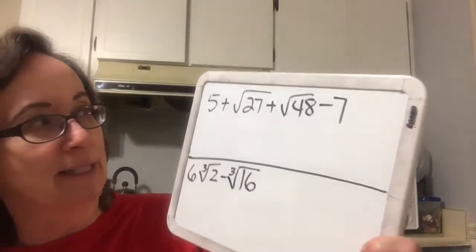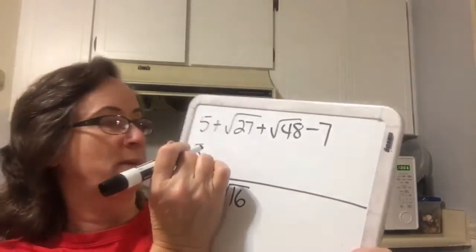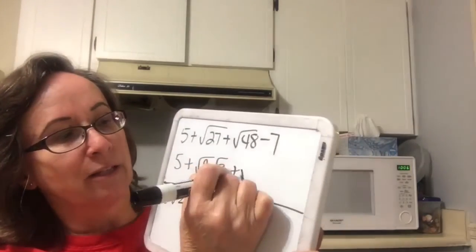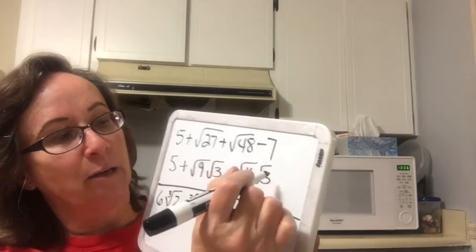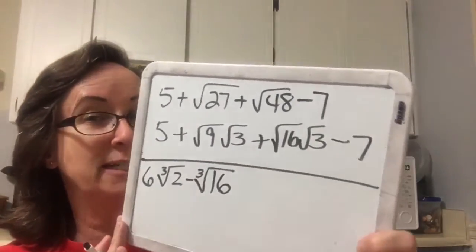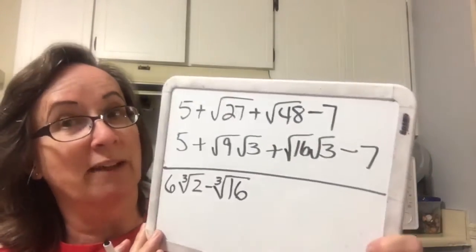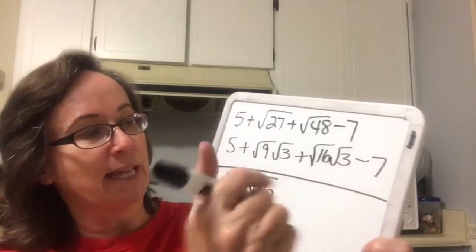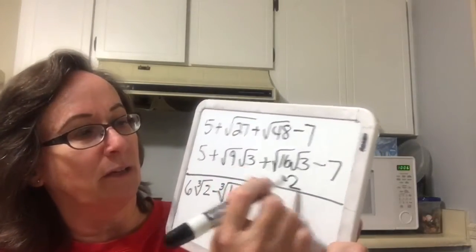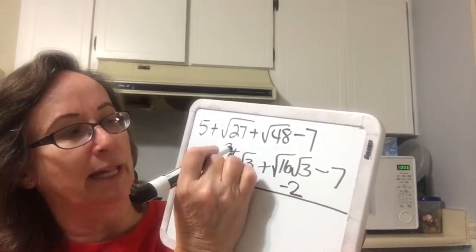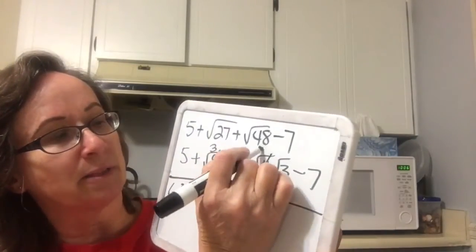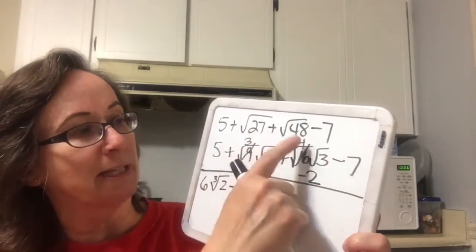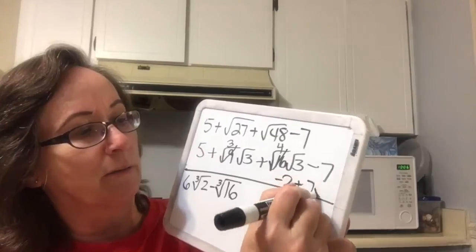Now we've got a 5. We break up the 27 into a square root of 9 times a square root of 3, plus the square root of 16 times a square root of 3, minus 7. See how much easier it is if you know your multiplication facts? 5 take away 7 is negative 2. This one becomes a 3 when we pull it out of the radical, this one becomes a 4, and since they have the same radical parts, we get 3 plus 4 is 7 square root of 3.